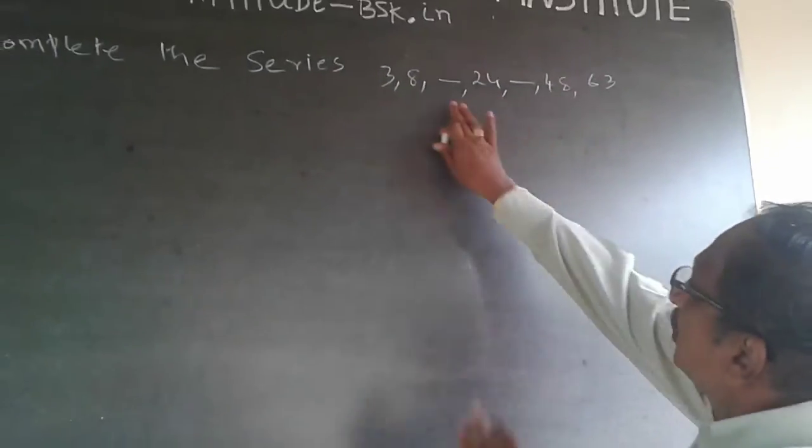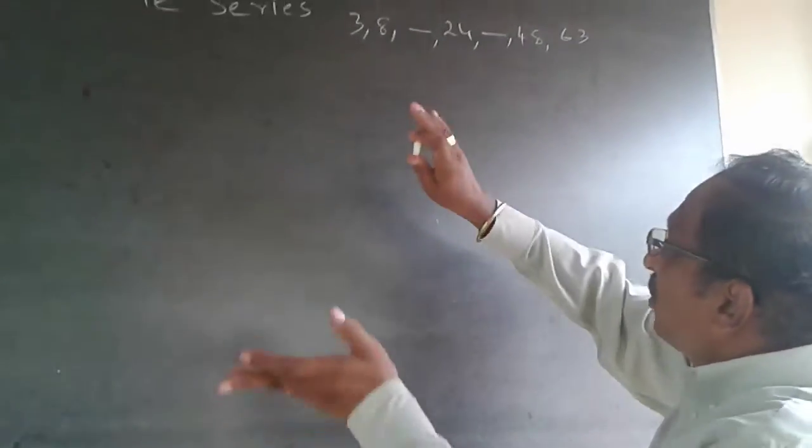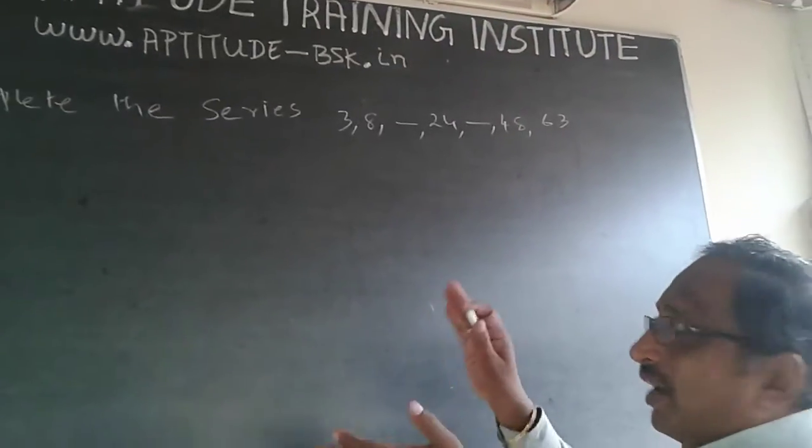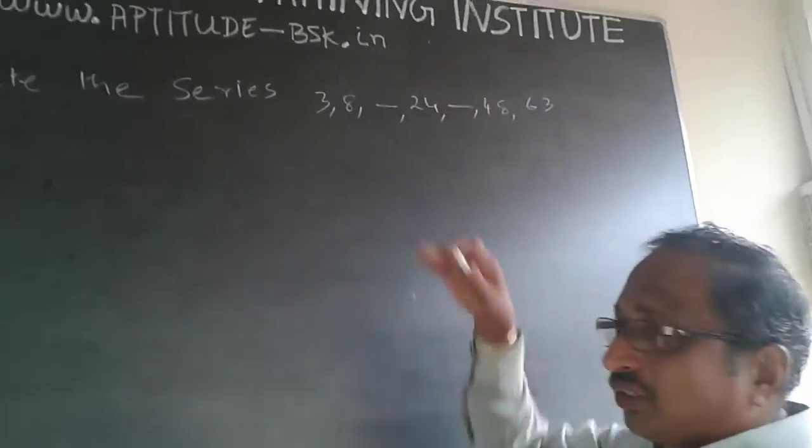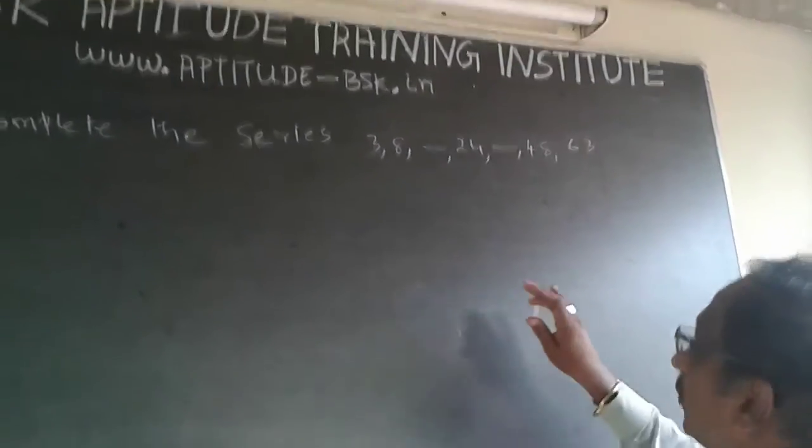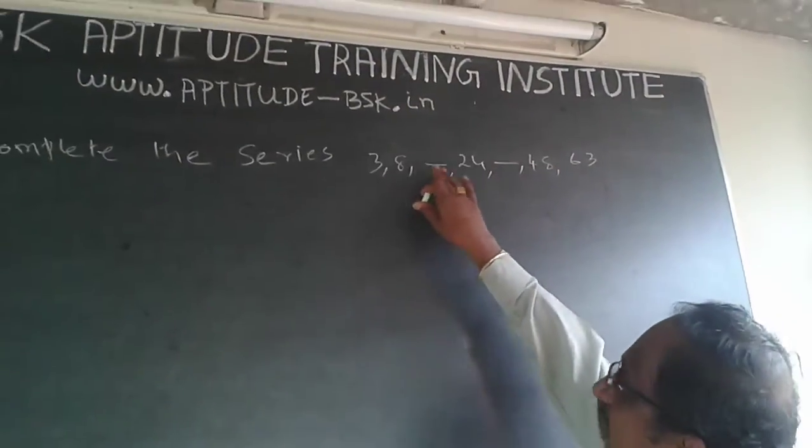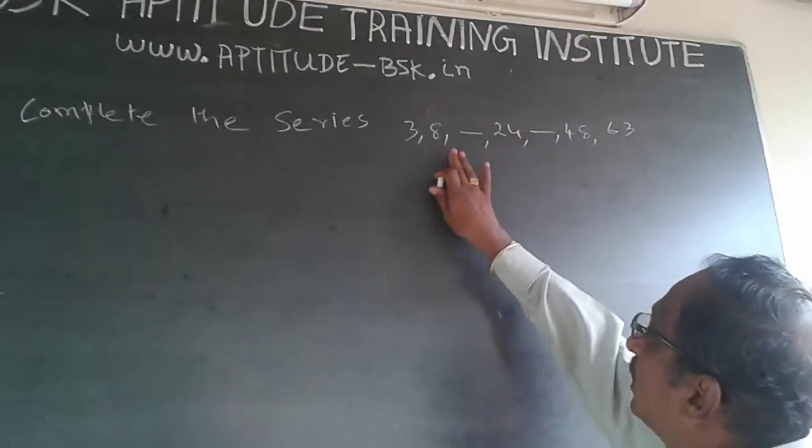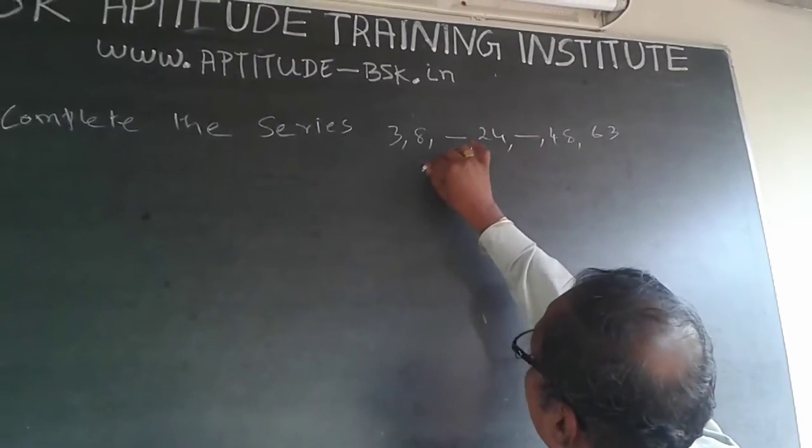There is an increase of 10, so I cannot increase 15 everywhere. It's increasing in ascending order of odd numbers. Next number will be plus 7, which will be 15.